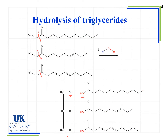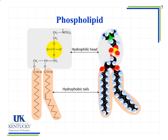We looked at phospholipids earlier when discussing cell membranes. The difference between a phospholipid and a triglyceride is that one of the fatty acid tails has been replaced by a phosphate group. The structure still has three carbons from glycerol, two ester groups attaching the fatty acid tails — one saturated (all single bonds) and one monounsaturated (one double bond) — but the third tail is replaced by the phosphate group.